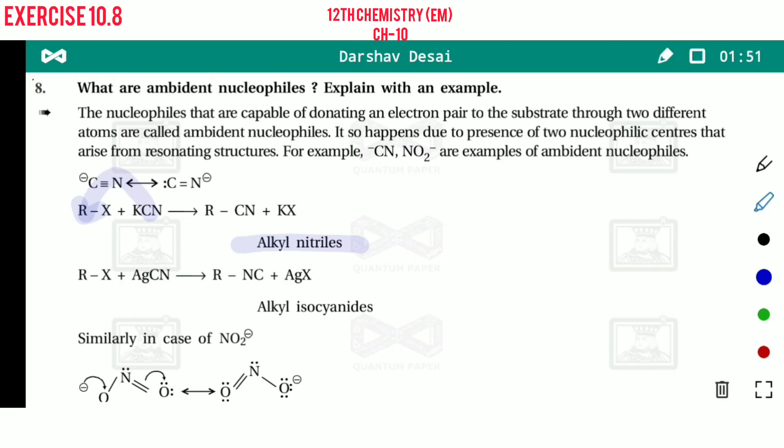Now in presence of AgCN, haloalkane reacted with AgCN, silver cyanide, and this one is called potassium cyanide. If haloalkane reacted with AgCN, then nitrogen acts as a nucleophile. So attacking reagent is here nitrogen.